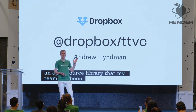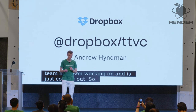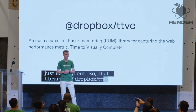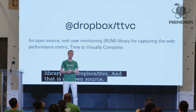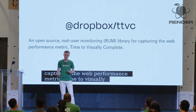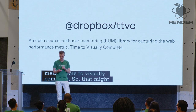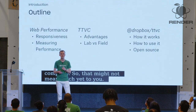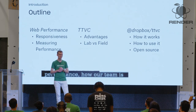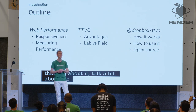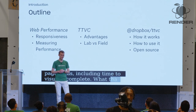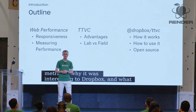That library is at Dropbox slash TTVC, and that is an open source real user monitoring library for capturing the web performance metric Time to Visually Complete. That might not mean much yet to you, so I'm going to go through a little bit of background here — talk a bit about web performance, how our team is thinking about it, the metrics for measuring page load including Time to Visually Complete, what that metric is, why it was interesting to Dropbox, and what we do with it, and then how the library works.